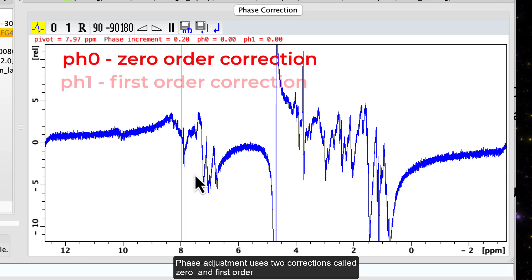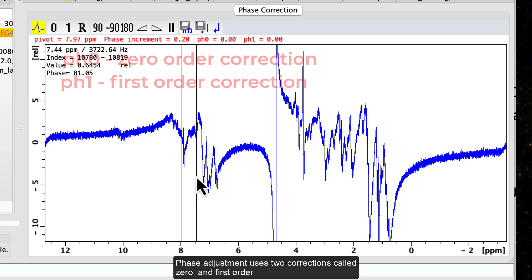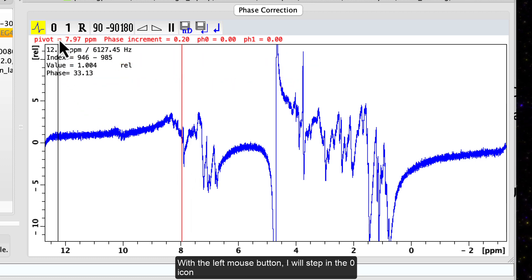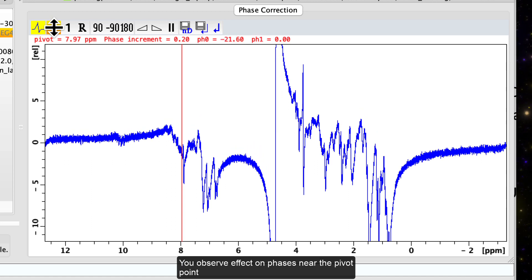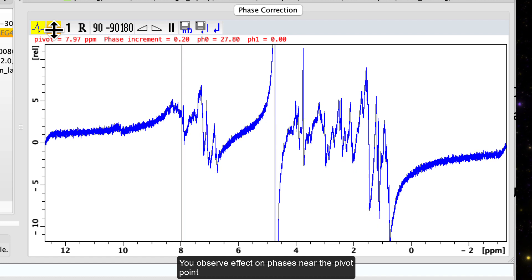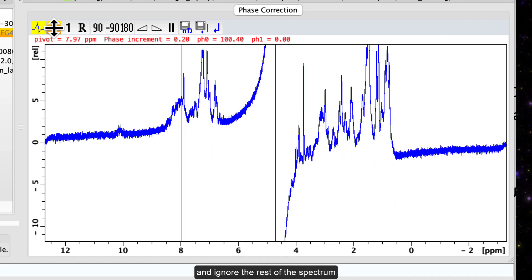Phase adjustment uses two corrections called zero and first order. With the left mouse button, I will step on the 0 icon, hold the button and move the mouse up and down.